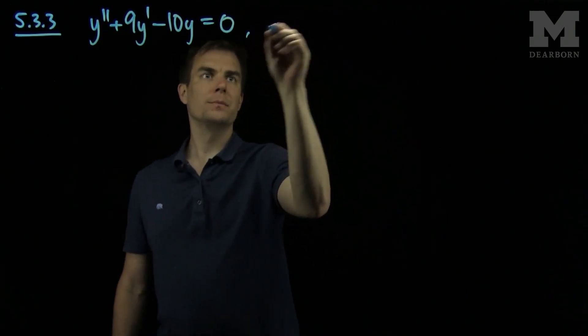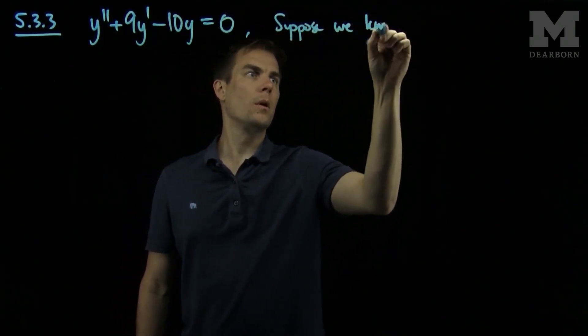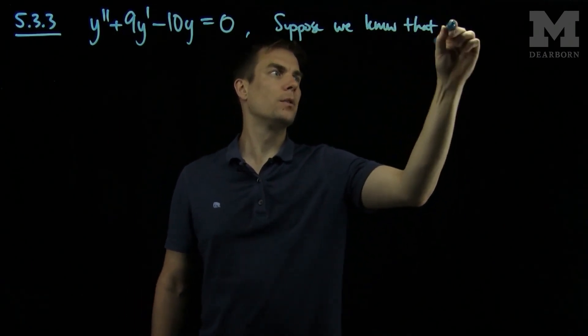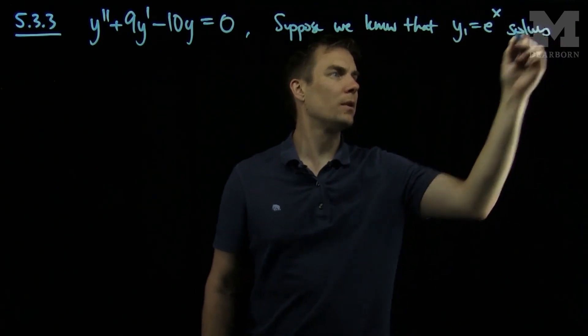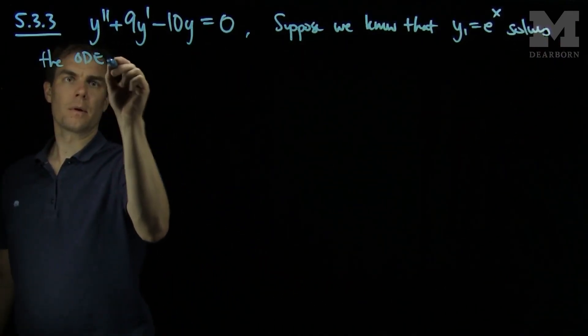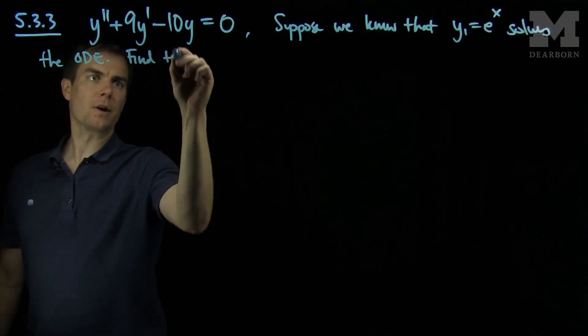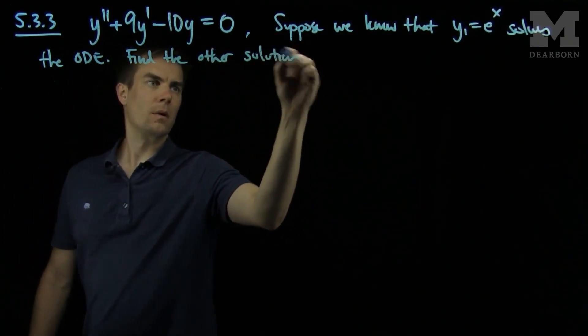And it says suppose we know that y1 equals e to the x solves the ODE. We want to find the other solution by reduction of order.